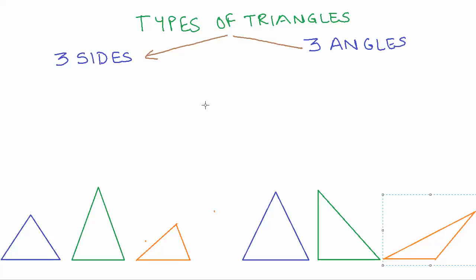In this video we are going to learn about the different types of triangles, classified according to some characteristics. We know and have already discussed that triangles have six basic elements or six characteristics — they have three sides and three angles — and it is possible to classify triangles depending on what their sides or angles are, and that is precisely what we are going to do to come up with the type of triangle.